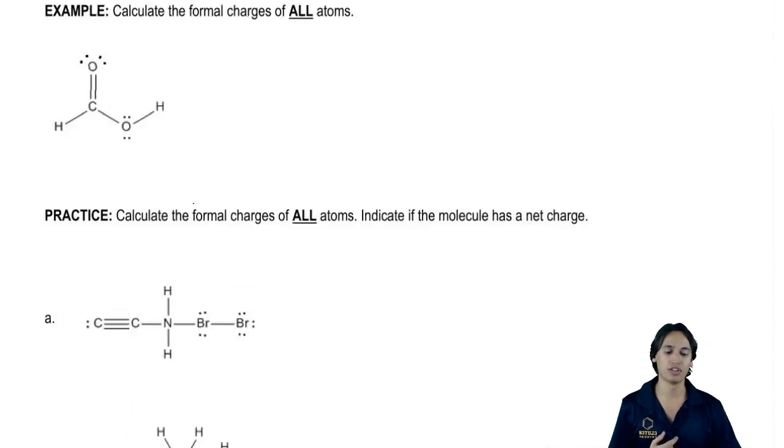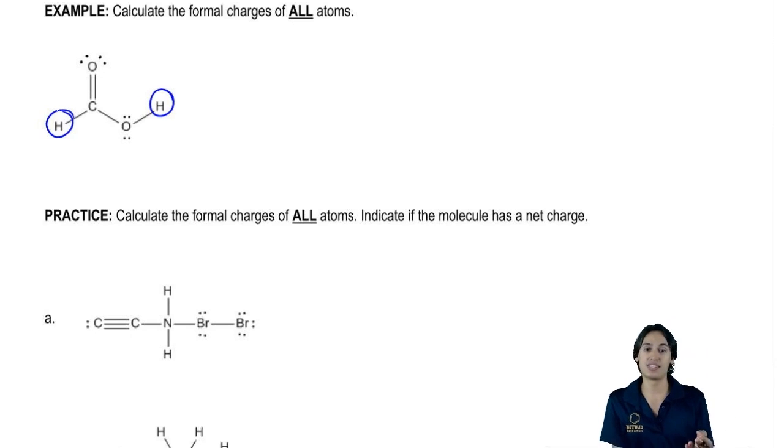Let's go ahead and do this example where I want to look at each atom and count the formal charges for all of them. What that means is I'm going to be looking at group numbers and I'm going to be looking at sticks and dots. So let's start off with the hydrogens, even though we already know that this fits the bonding preference.